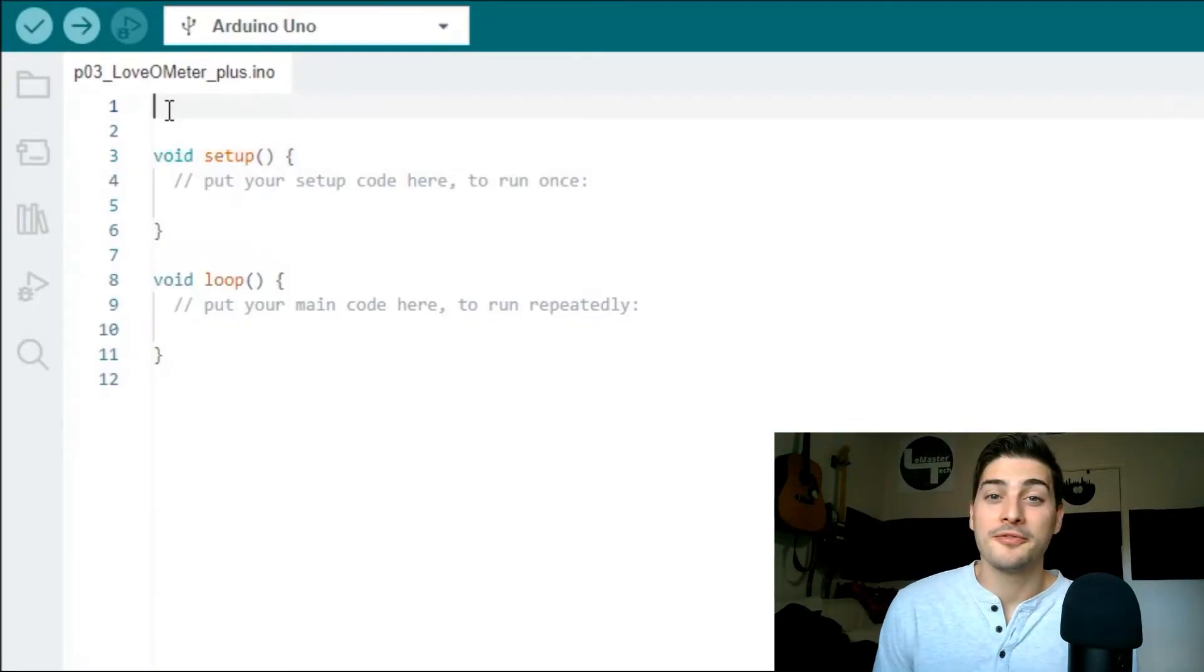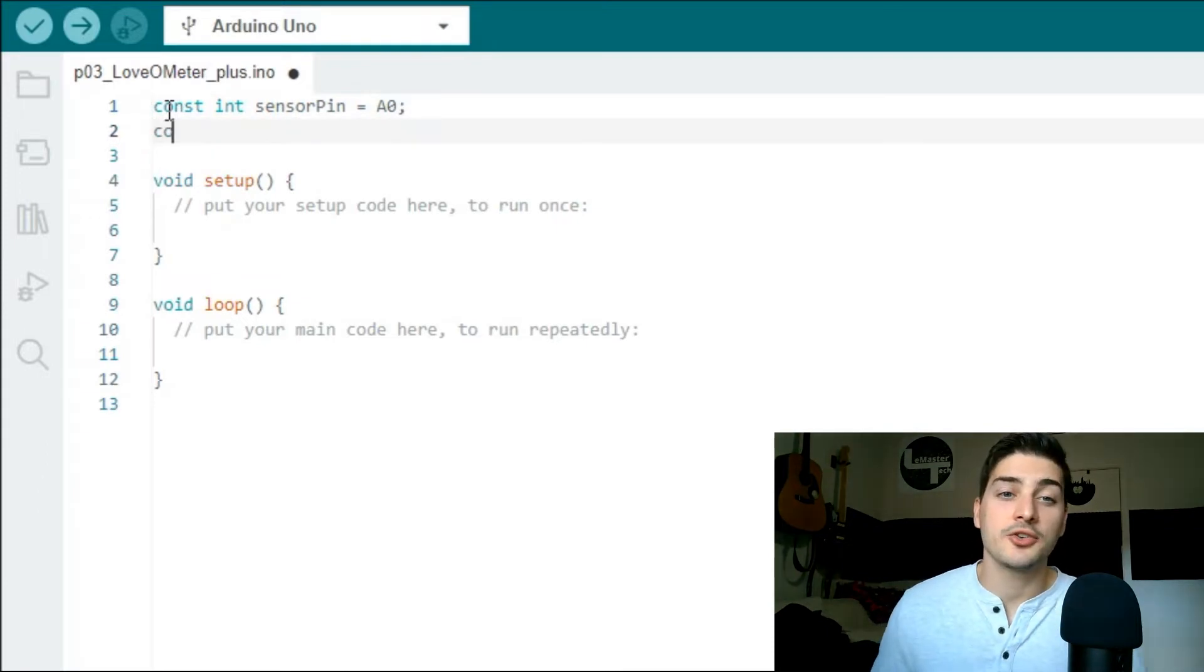Start by defining a couple variables right at the top of your program. First, an integer called sensor pin, where we will store which pin we have the temperature sensor hooked up to. In this case, A0. Second, create a float called baseline temp that you'll define to be approximately room temperature. In this case, I'm using 18.5 Celsius, or 65 Fahrenheit. And you can play around with this a bit later.